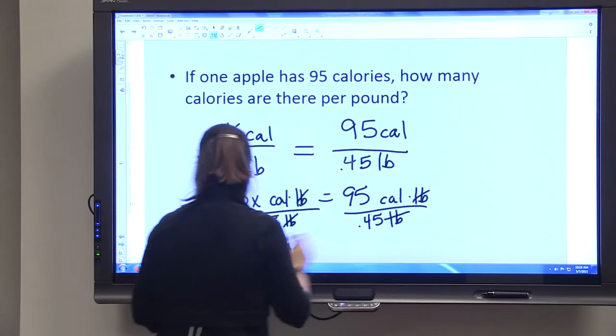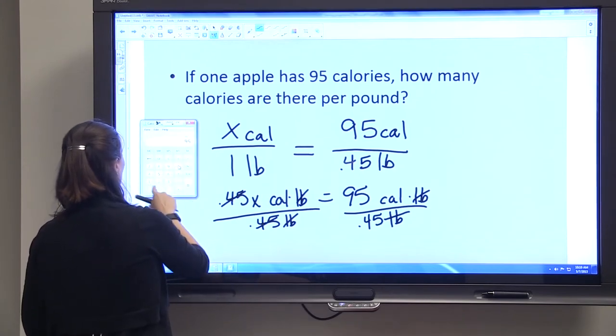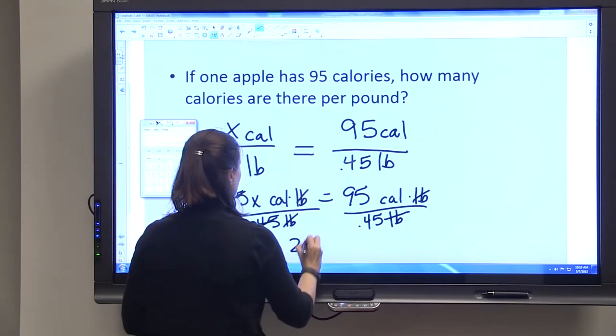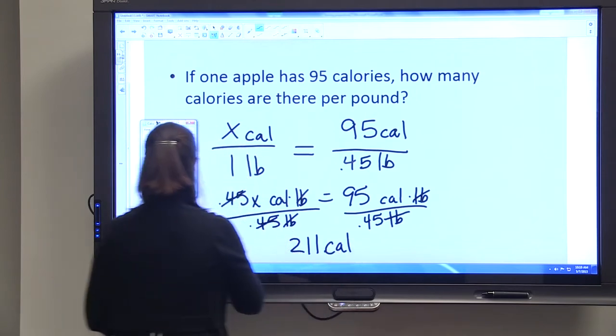We got our calculator here: 95 divided by 0.45 is 211 calories per pound.